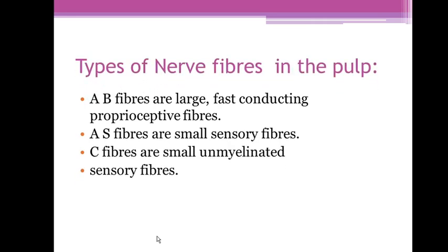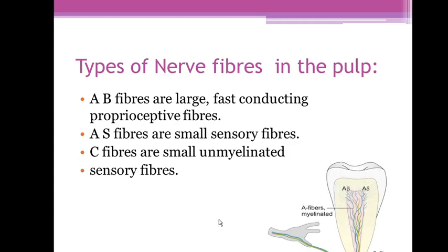There are types of nerve fibers in the pulp. The pulp has A-beta fibers, which are large fast-conducting proprioceptive fibers. There are also A-alpha fibers, which are small sensory fibers. Finally, there are C fibers, which are small unmyelinated sensory fibers — three different types in total.